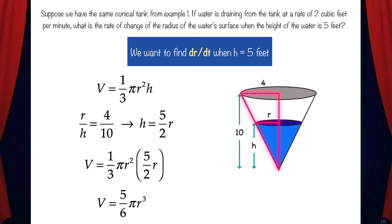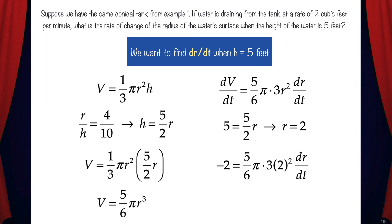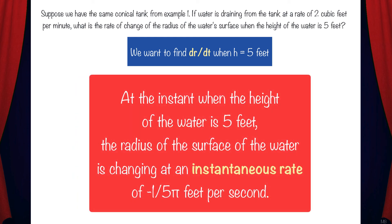Now let's take the derivative of this equation with respect to time. dv/dt equals five over six pi times three r squared dr/dt. We want to find dr/dt when h equals 5, but there's no longer an h in our equation. So we'll use the similar triangle relationship and solve for r when h equals 5, which gives us r equals 2. Now we can plug in negative 2 for dv/dt and 2 for r, and solving for dr/dt gives us dr/dt equals negative one over five-pi feet per second. This means at the instant when the height of the water is 5 feet, the radius of the surface of the water is changing at a rate of negative one over five-pi feet per second.